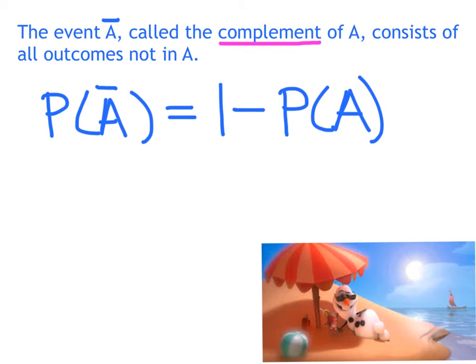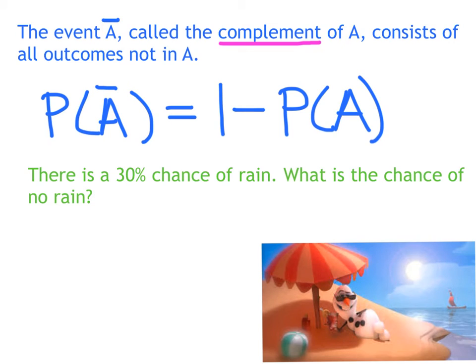Because if something could happen or not happen, then if you added those two probabilities up, you would get 1. So when you're finding the complement, you're just doing the opposite. For example, if I had a nice day outside planned and there was a 30% chance of rain, what would the chance be of no rain? And so you guys probably do this automatically in your head. But you'd say, well, 1 minus 0.3 is 0.7. So there's a 70% chance of no rain. Sounds much better saying 70% chance of no rain than 30% chance of rain.